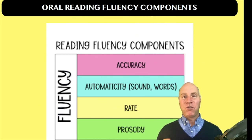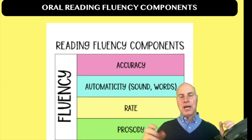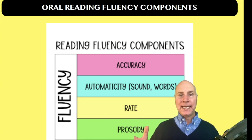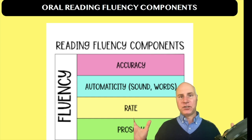Oral reading fluency is made up of four major components. We think of it as accuracy, reading rate or speed, expression or prosody, and then automaticity.